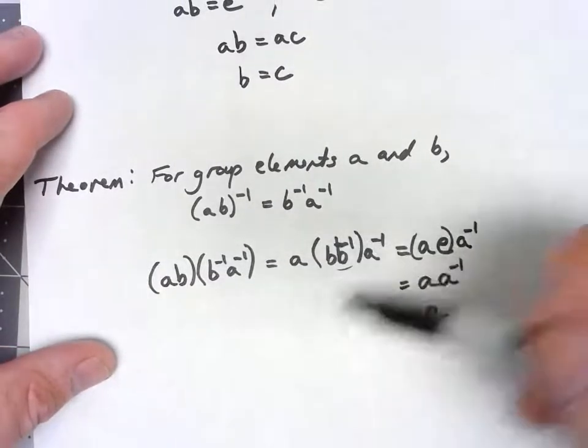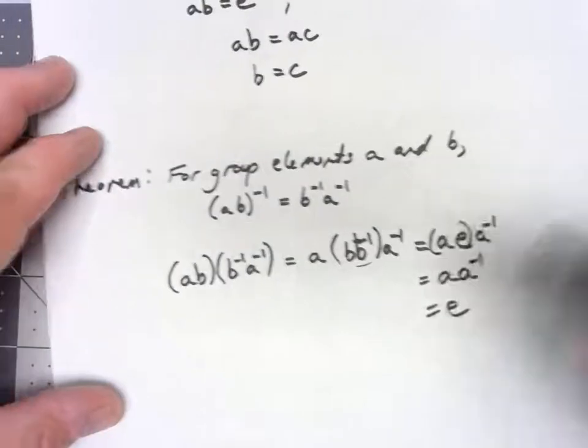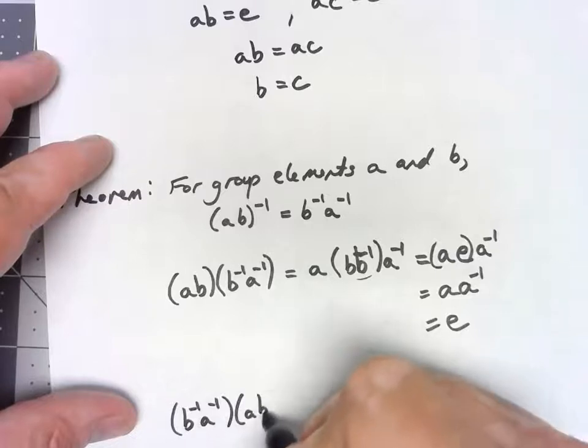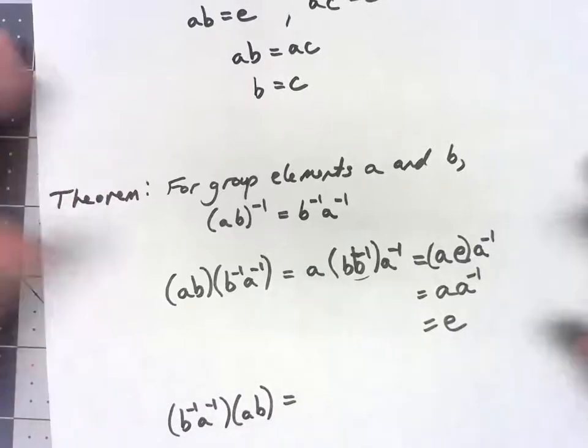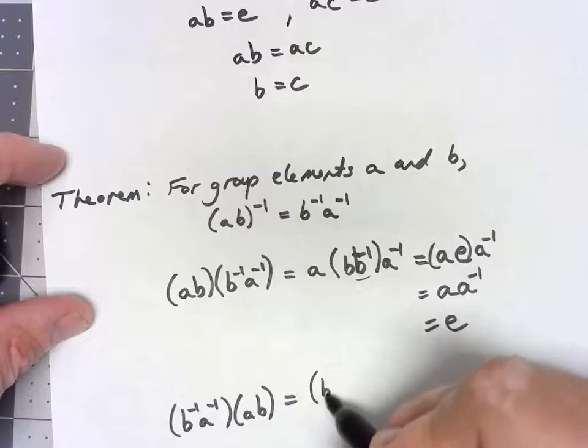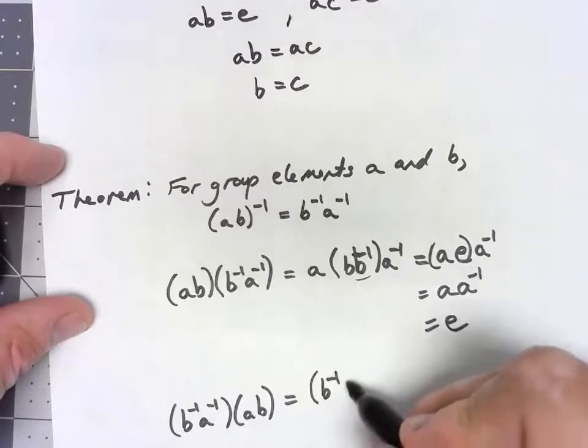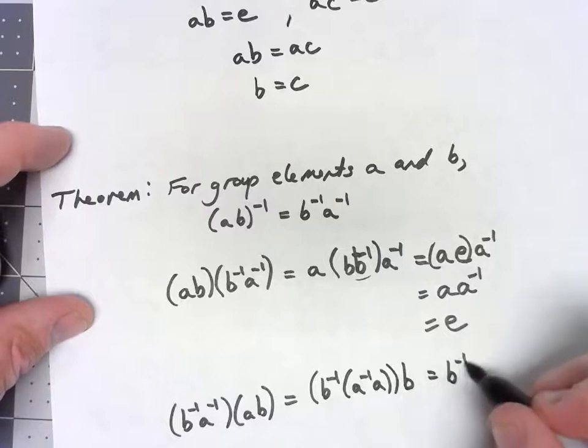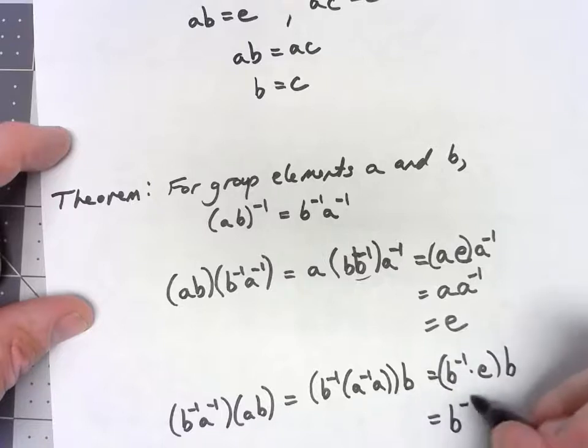But to be an identity, it has to work both on the left and the right. So I also have to check that B inverse A inverse times AB. That should also come out to be the identity, and it's very similar. Do some associativity stuff and we get B inverse times A inverse A times B. That's B inverse times E times B. That's B inverse times B, and that's the identity.